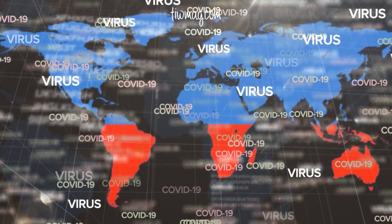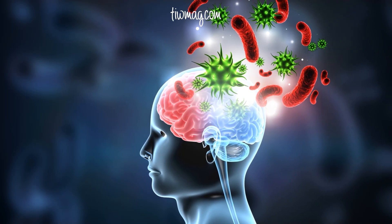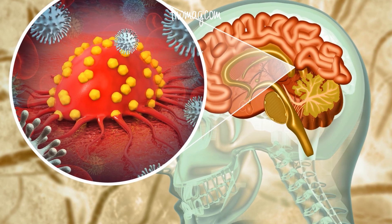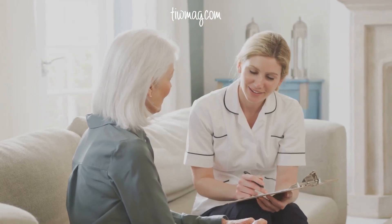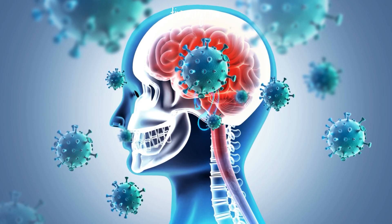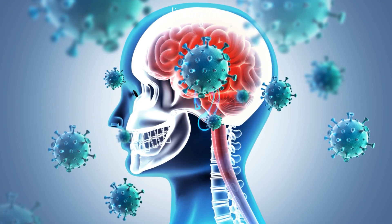HSV-1 is particularly widespread, with an estimated two-thirds of the global population under the age of 50 carrying the virus. While it is often benign and asymptomatic, HSV-1 can travel along nerve pathways and enter the central nervous system, CNS.